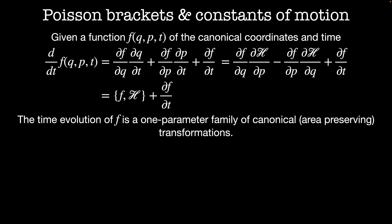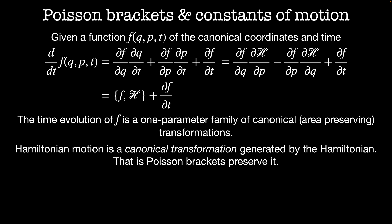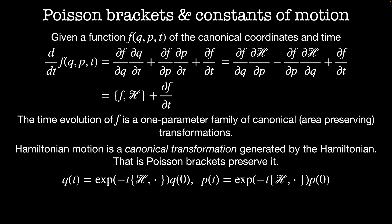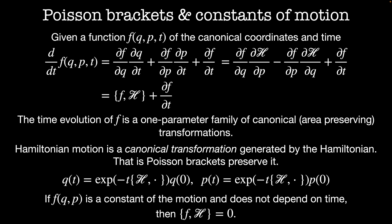So what sorts of things preserve the motion? One thing that preserves the motion is the Hamiltonian — that is, Hamiltonian motion is preserved under the Poisson brackets. We can integrate the equations of motion to find that q(t) is equal to e to the minus t times the Poisson bracket of the Hamiltonian with the motion times the initial value of q, and the equivalent relationship holds for the generalized momentum. You might recognize this as solutions to the time-dependent Schrödinger equation in quantum mechanics, only with the commutator instead of the Poisson bracket. Then if some function f(q, p) is a constant of the motion and does not depend on time, the Poisson bracket of f with the Hamiltonian is equal to zero.